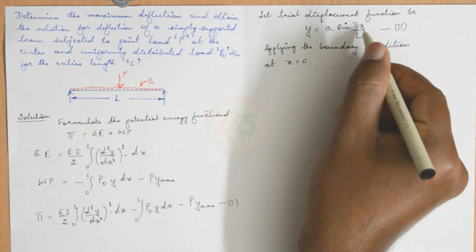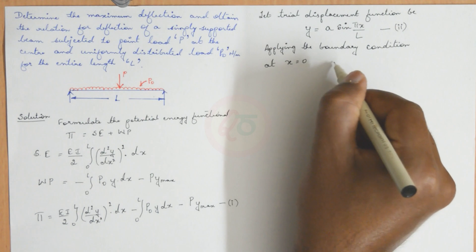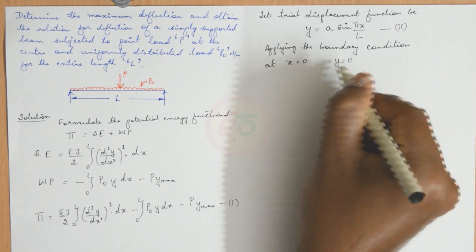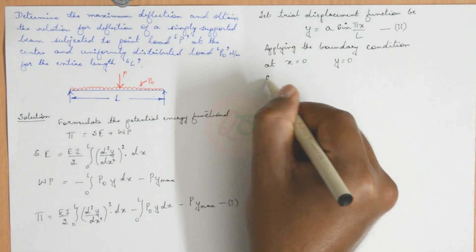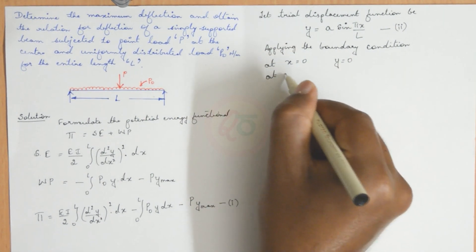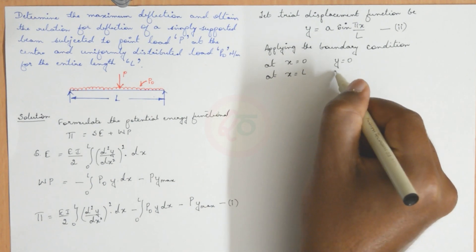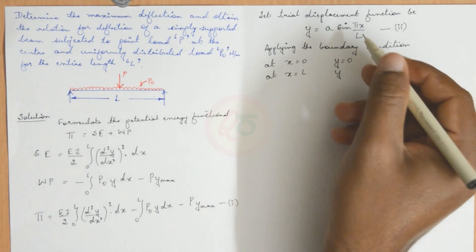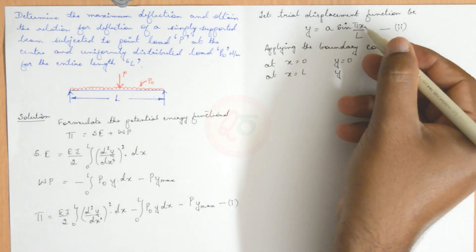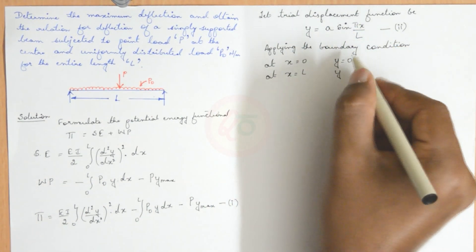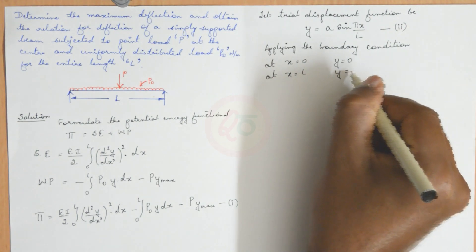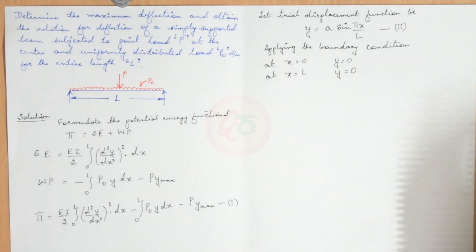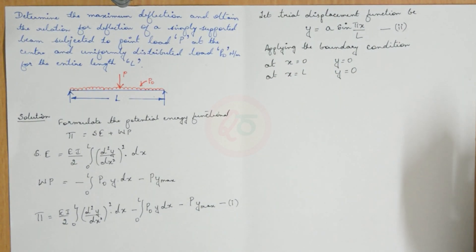If you substitute x = 0, y will become equal to 0. At x = L as well, y should be 0. If you substitute x = L, sin(π) is again 0, so y becomes 0. So it satisfies the necessary boundary conditions.